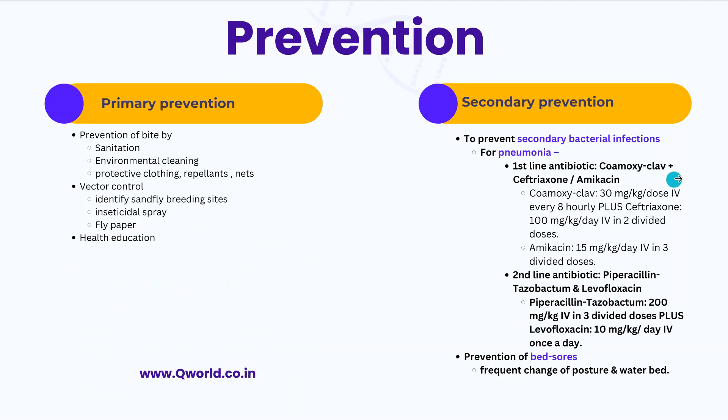For prevention, the focus is on preventing sandfly bites through sanitation, environmental cleaning, protective clothing, repellents, and nets. Vector control involves identifying sandfly breeding sites, doing insecticide spraying, using fly papers, and health education. To prevent secondary complications such as bacterial pneumonia, give first-line antibiotics like co-amoxiclav with ceftriaxone or amikacin, or second-line antibiotics like piperacillin-tazobactam and levofloxacin. Because patients are often comatose, frequent change of posture and use of a waterbed is recommended to prevent bed sores.